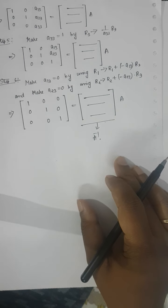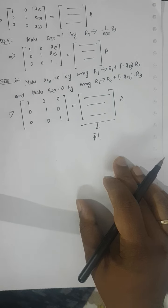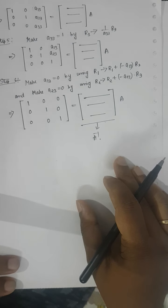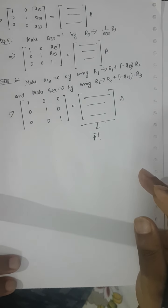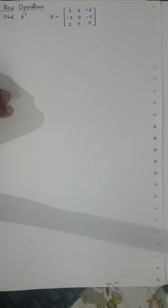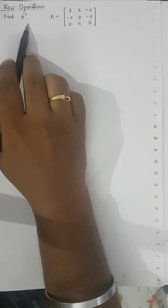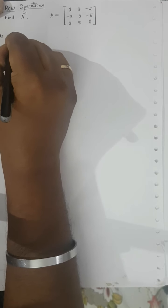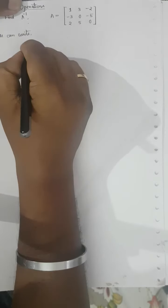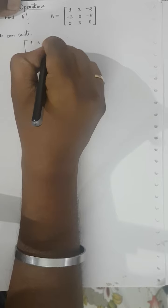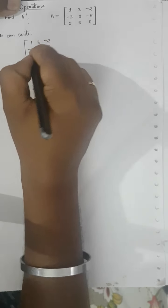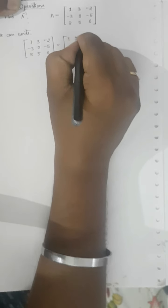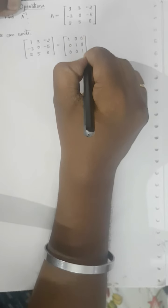Using this procedure you can find the inverse of any matrix without wasting too much time. Now I will show you an example of finding A inverse using elementary row operations. We are given: find A inverse where A equals [1, 3, −2; −3, 0, −5; 2, 5, 0]. We write A = I₃·A, so left side is A and right side is the identity matrix [1,0,0; 0,1,0; 0,0,1].